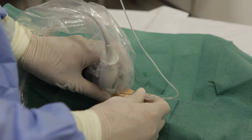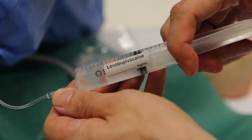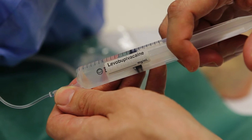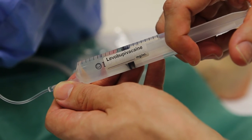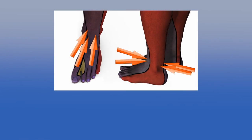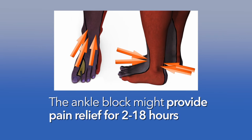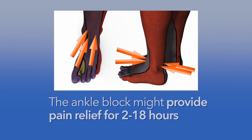Depending on the specific nerves blocked, your foot may feel partially numb or completely numb when you awake again in the recovery room. This illustration shows where your anaesthetist will inject local anaesthetic and demonstrates the area affected by a total ankle block. The ankle block may provide pain relief for between 2 and 18 hours.